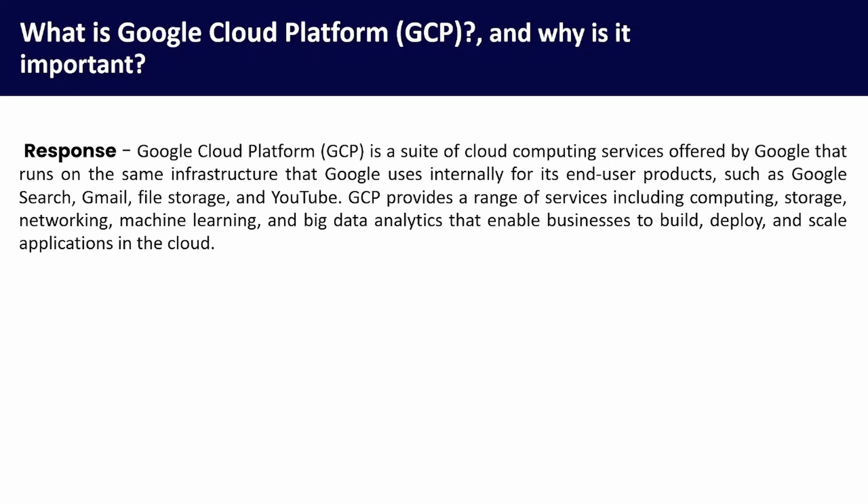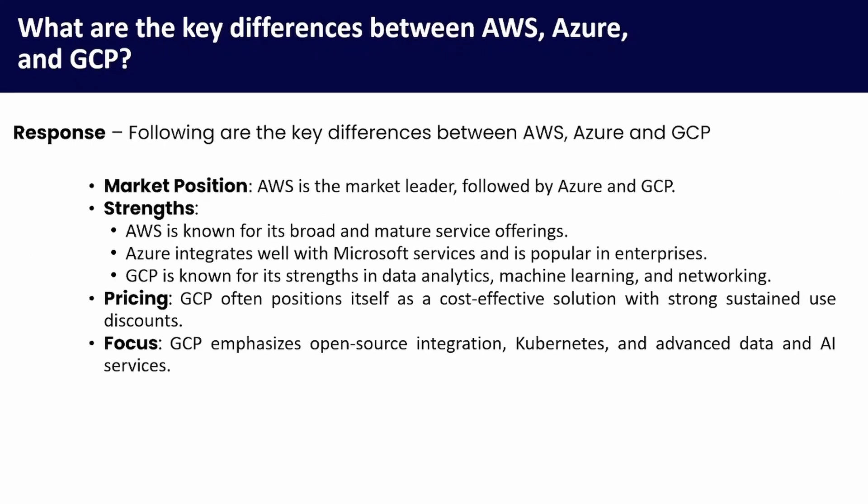Moving to the next one: what are the key differences between AWS, Azure, and GCP? First, market position — AWS is the market leader, followed by Azure and then GCP. Regarding strengths: AWS is known for its broad and mature service offerings; Azure integrates well with Microsoft services and is popular in enterprises; GCP is known for its strength in data analytics, machine learning, and networking.